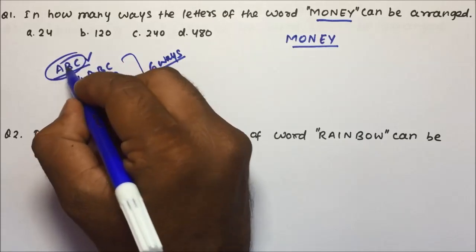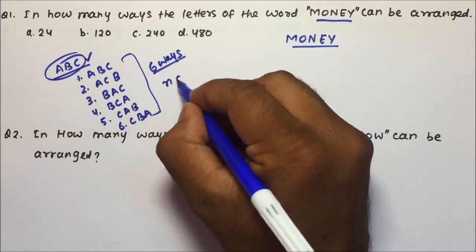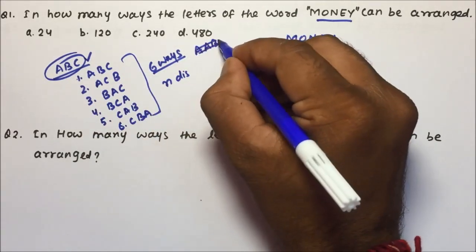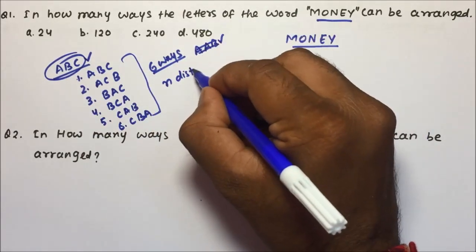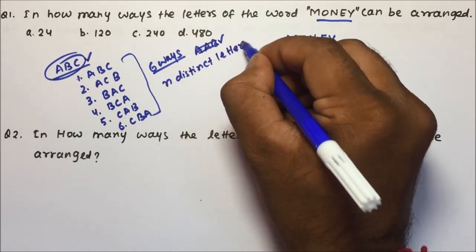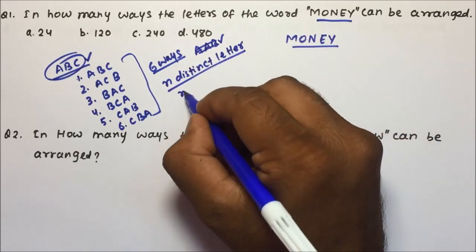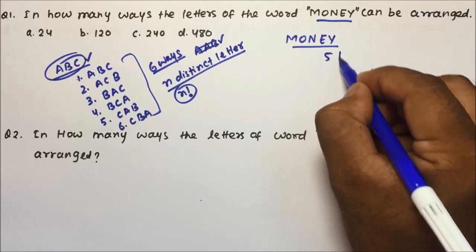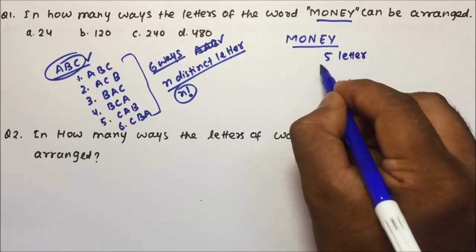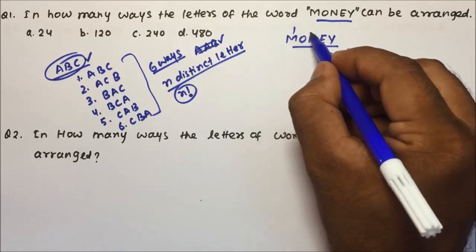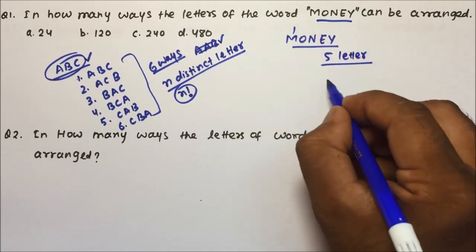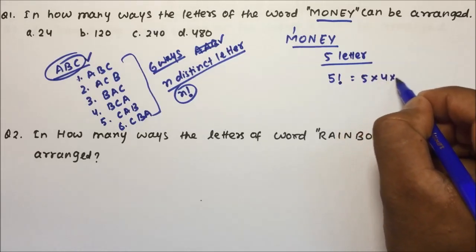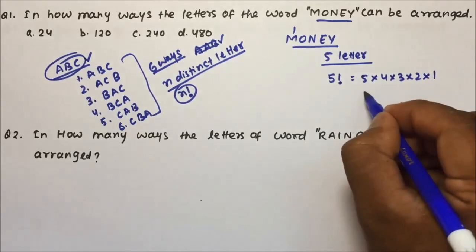If you have n distinct letters — meaning all letters are different, like ABC — then the arrangement will be n factorial. Coming back to MONEY, which is a 5-letter word with all distinct letters M-O-N-E-Y, it can be arranged in 5 factorial ways. 5 factorial is 5 into 4 into 3 into 2 into 1, which equals 120. You may ask: what if 2 letters are the same? That will be explained in Part 2.